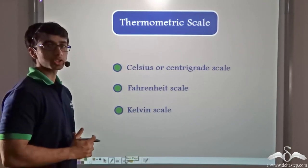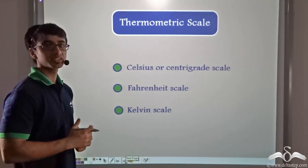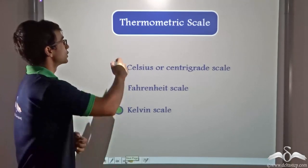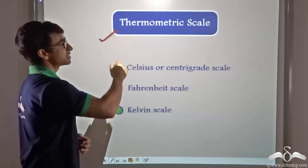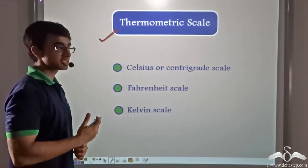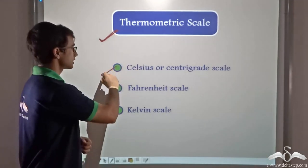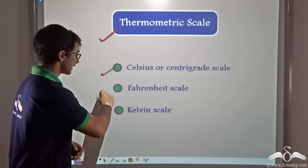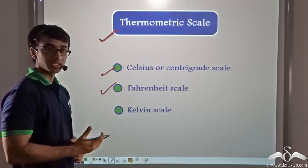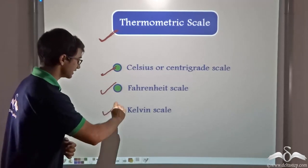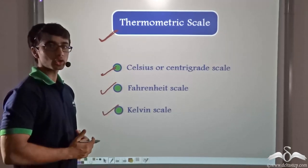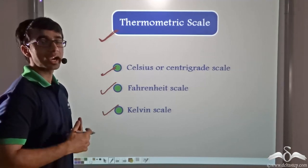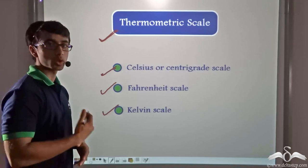A thermometer can be graded in three scales, which we call thermometric scales. The first is known as the Celsius or centigrade scale, the second is known as the Fahrenheit scale, and the third is known as the Kelvin scale. We are going to talk about how the thermometer can be graded in these scales and how these scales are related to one another.